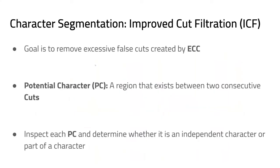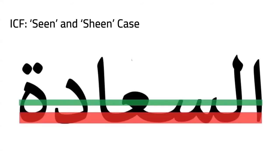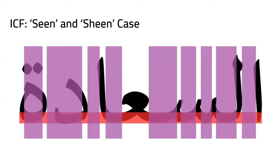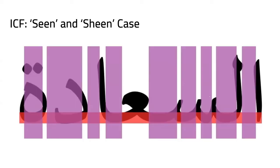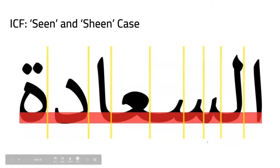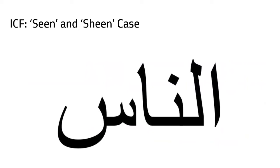While the previous algorithms find all required cuts, they also create excessive cuts. The goal of the ICF is to filter these. A potential character is any region between two cuts — the goal is to determine whether each potential character is an independent character or has been falsely segmented. There are three general cases that generate excessive cuts. The first is the Sin and Shin case: the Sin letter intersects the LMT three times, generating two excessive PCRs and thus two excessive cuts.